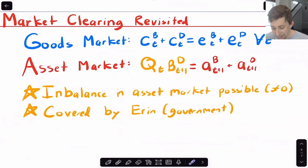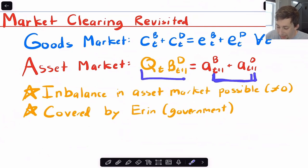Now, just to revisit this market clearing, we're still going to have a goods market clearing. Our asset market clearing before used to be zero. It used to be that our asset market had to completely clear, but now it doesn't because Erin can basically fill any deficit or any imbalance in the asset market with these government bonds. And so imbalance in the asset market is possible because it's going to be covered by Erin, who's fulfilling the role of the government.